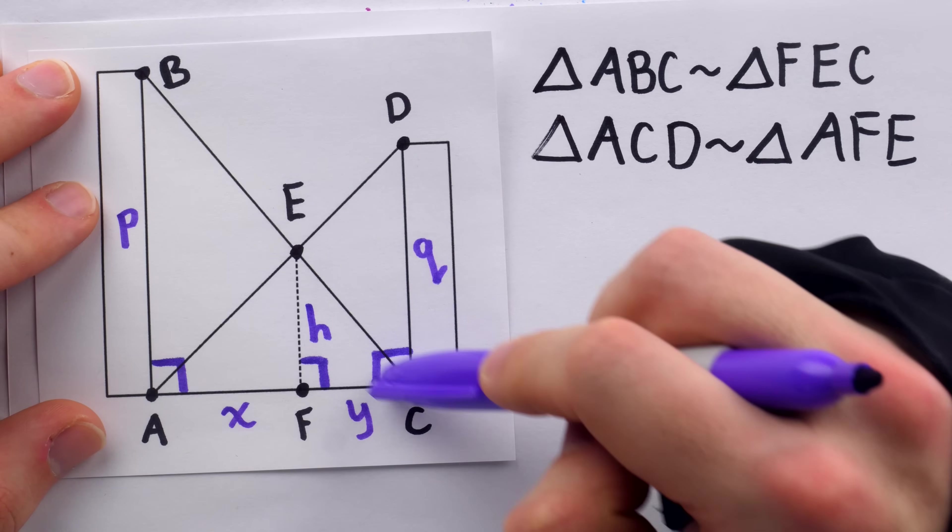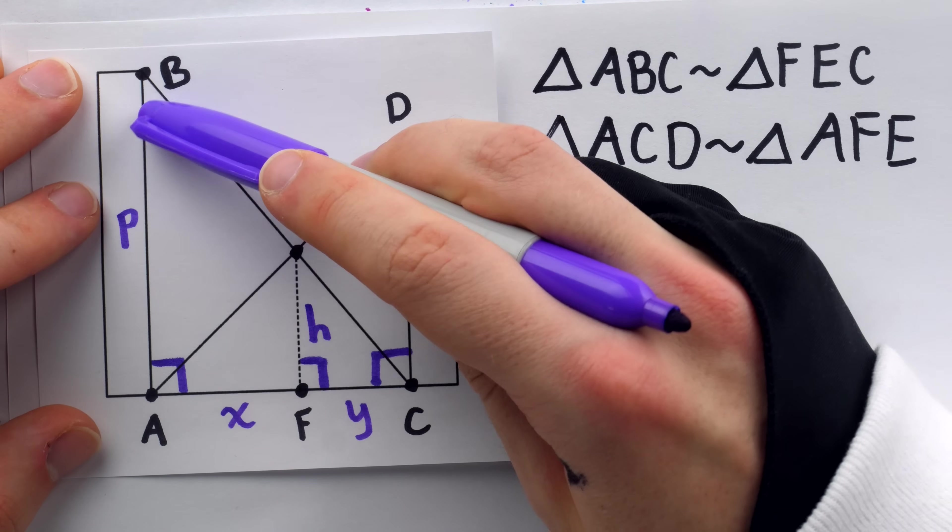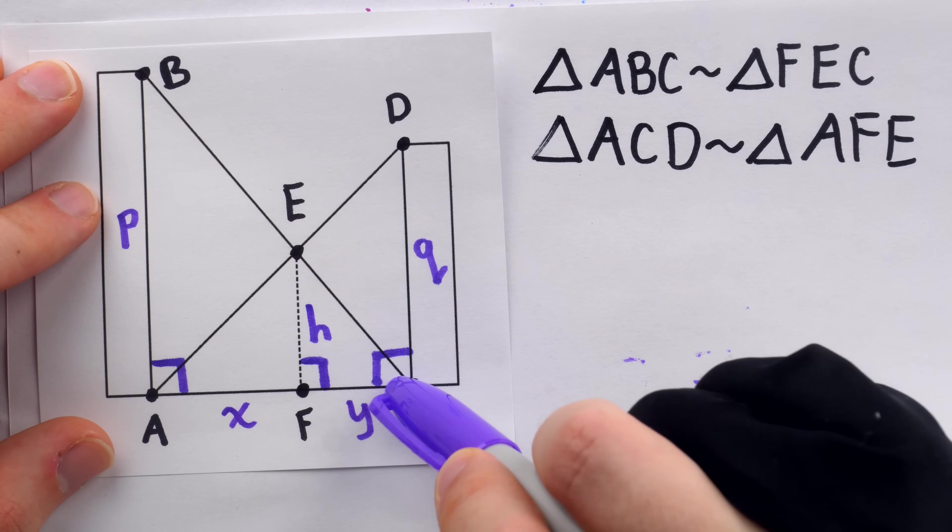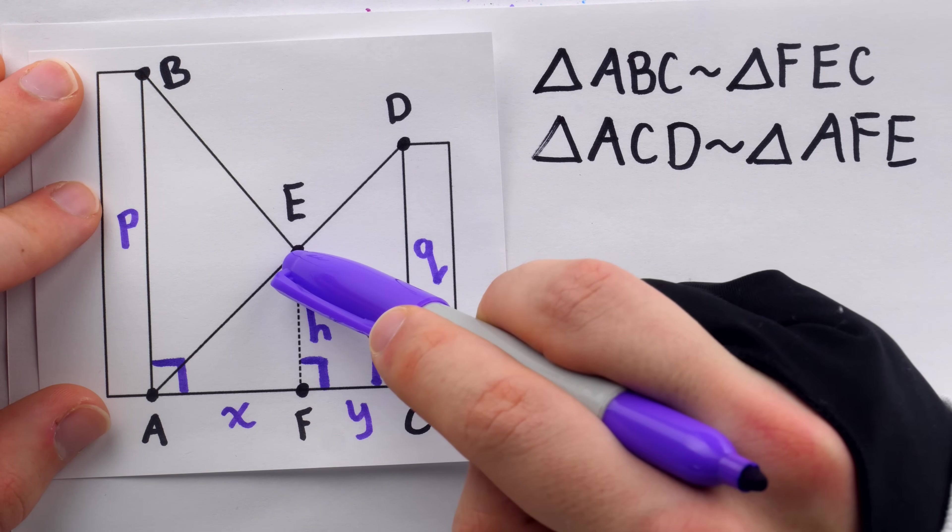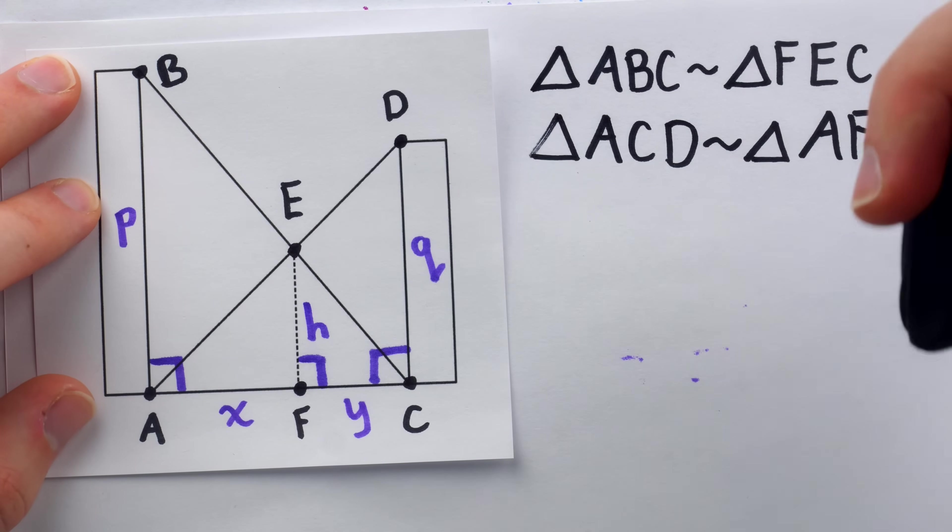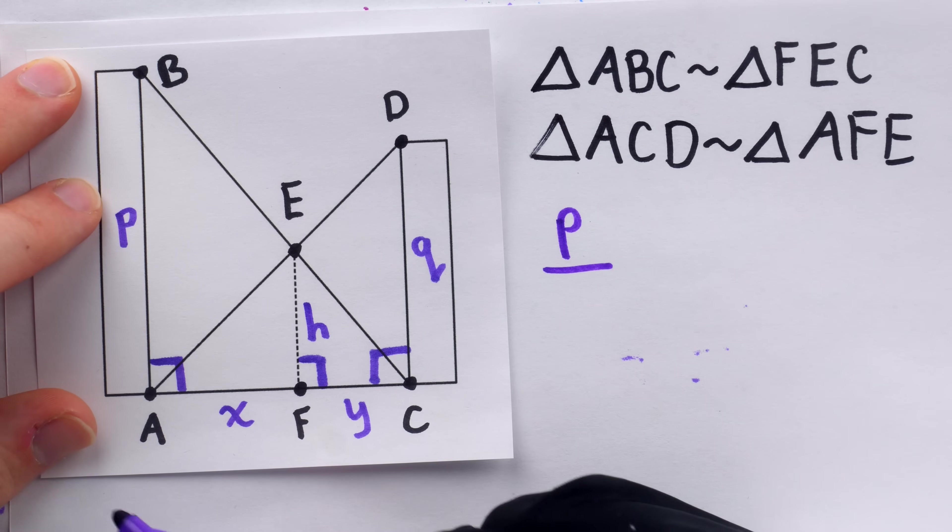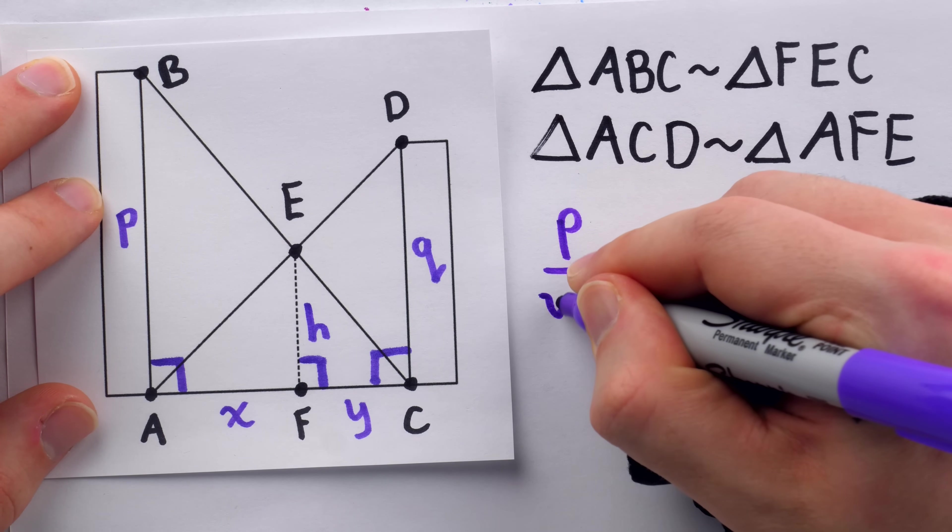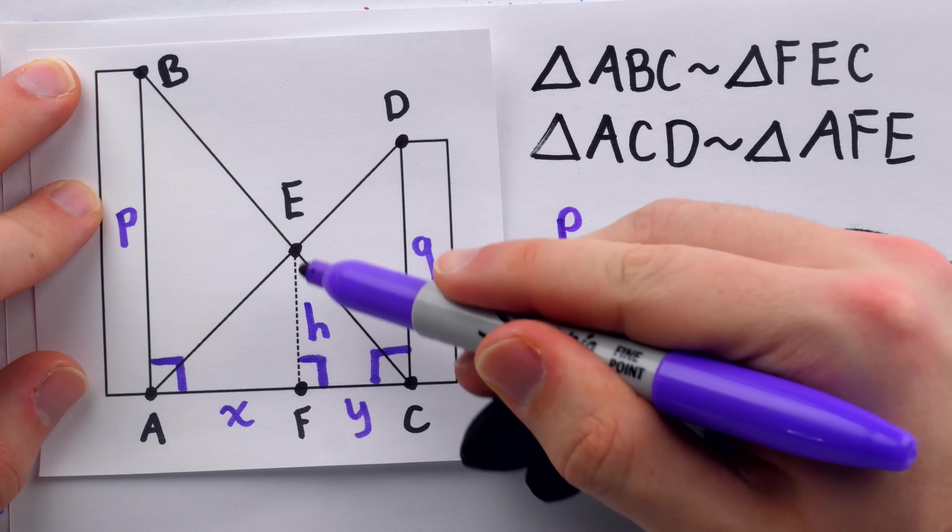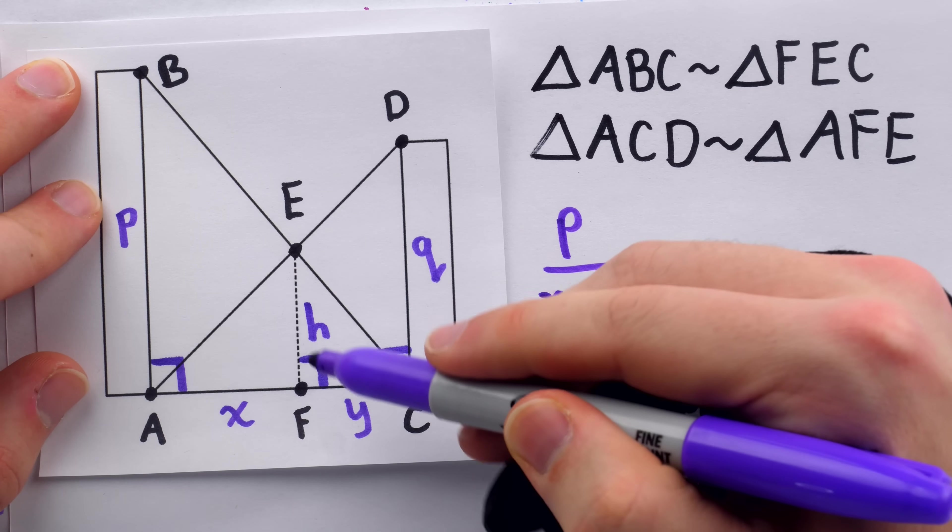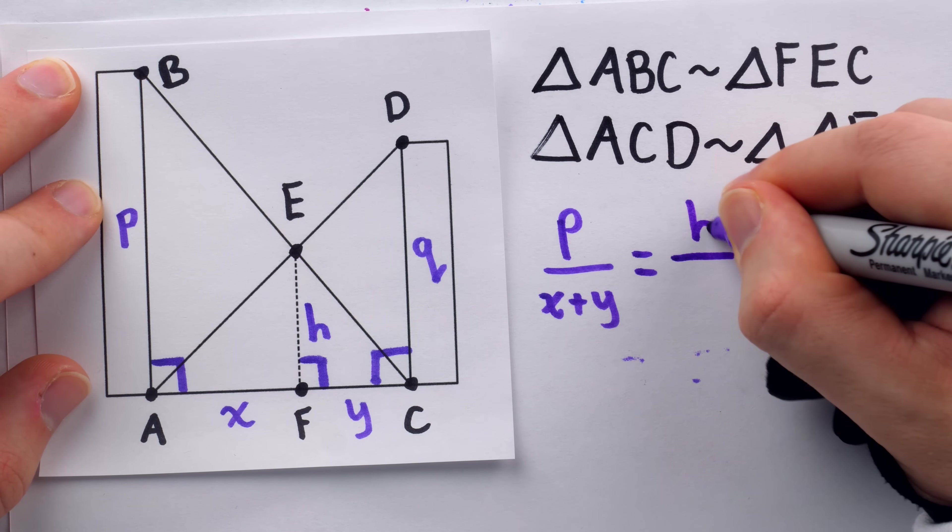All right, then from the similarity of this triangle and this one, we know that the ratio of AB to AC must be the same as the ratio of FE to FC. The length of AB we have called P. So we have that the ratio of AB, which is P, to AC, which is X plus Y, must equal the ratio of the corresponding sides in this similar triangle. That's FE to FC, and that ratio is H to Y.